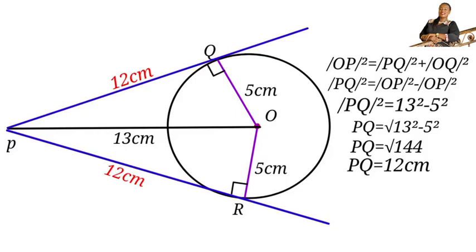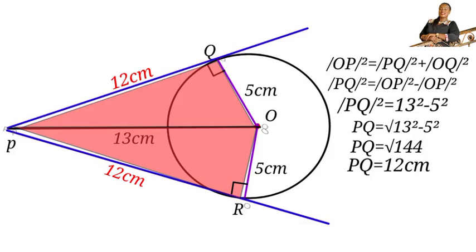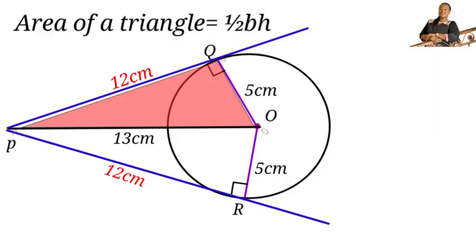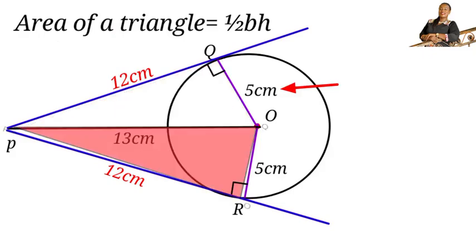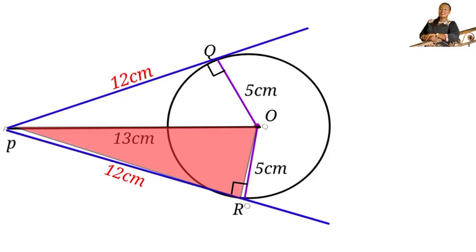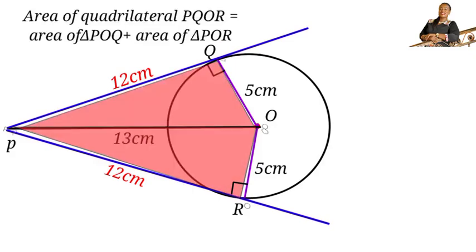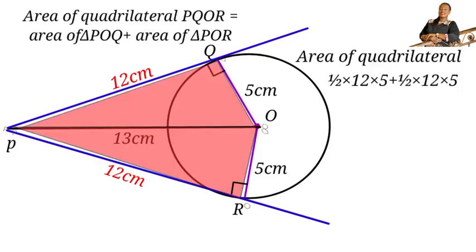So our question is to find the area of the quadrilateral PQOR. Now we have two triangles there. The formula for finding the area of a triangle is half base times height. Let's consider the first triangle POQ. The base in this triangle will be 12 centimeters and the height will be 5 centimeters. To find the area of the quadrilateral PQOR, we are going to add the area of the two triangles.